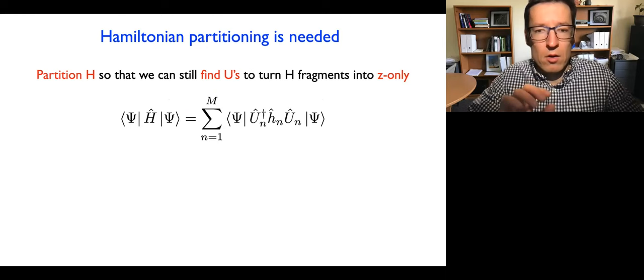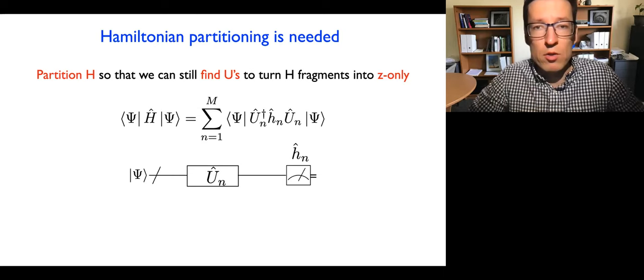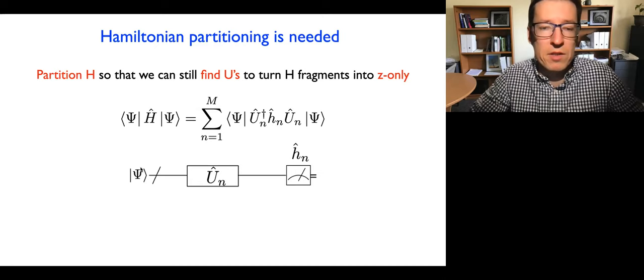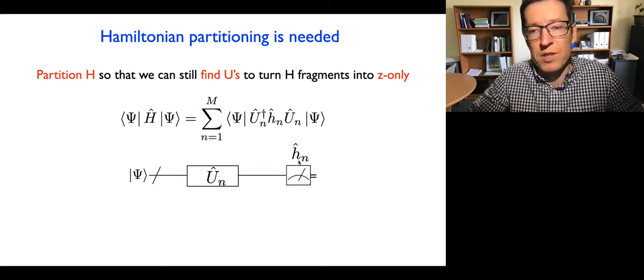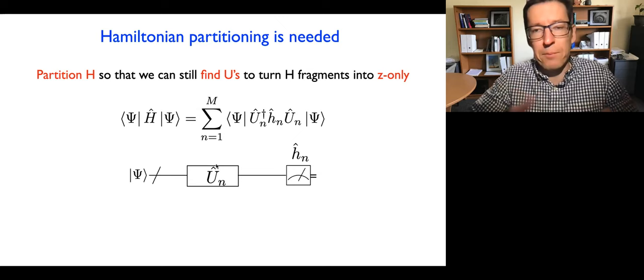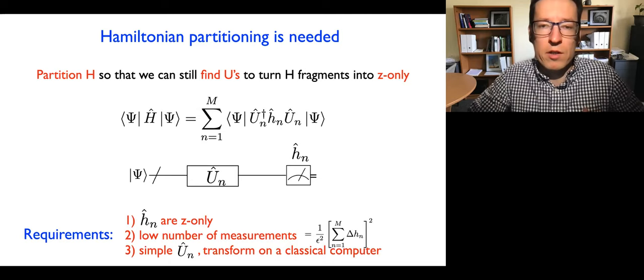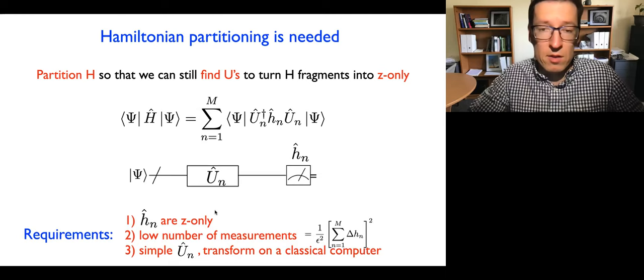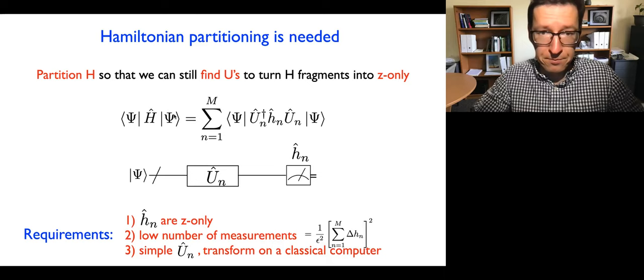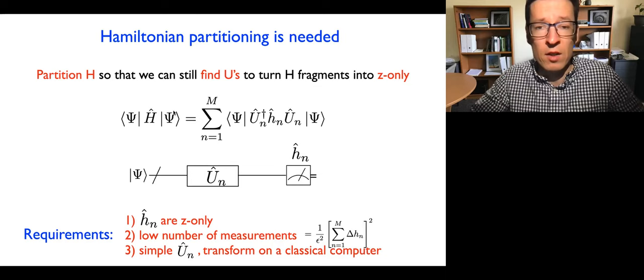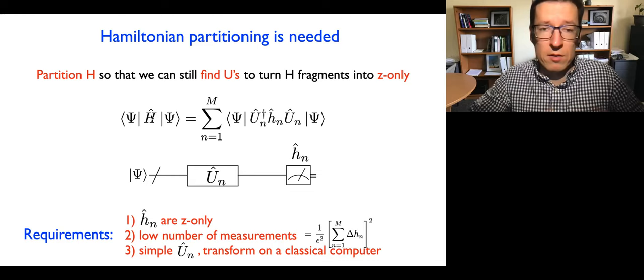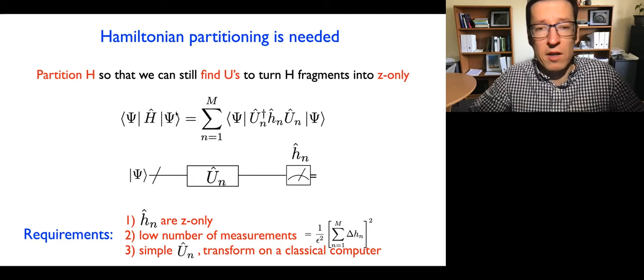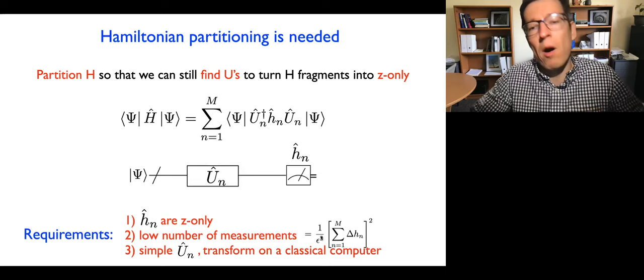The extra unitaries used for each fragment need to go on the circuit. The scheme is quite simple: you prepare your wave function, and before measuring the Z operator you add an extra unitary that rotates the particular fragment into the right frame. The requirements are that what you measure should contain only that fragment, we'd want the lowest number of measurements needed, and one caveat is that in VQE we prepare a wave function close to the ground eigenstate of the Hamiltonian. Once we partition into fragments, the fragments don't necessarily commute or share eigenstates, so the wave function is not necessarily an eigenstate of the fragments we measure.